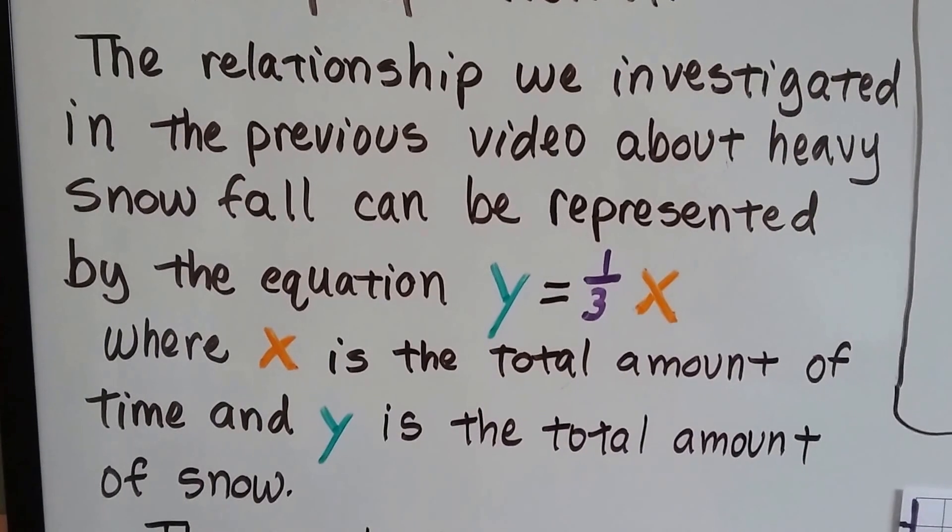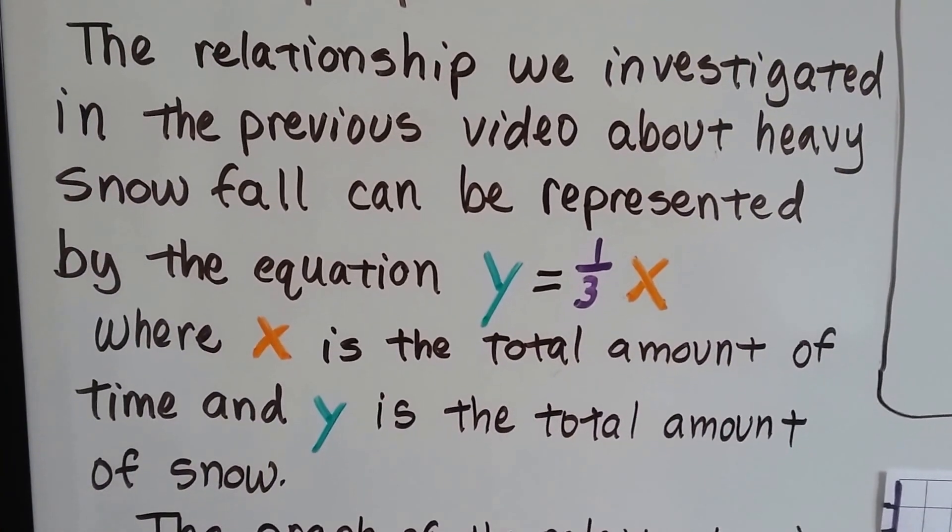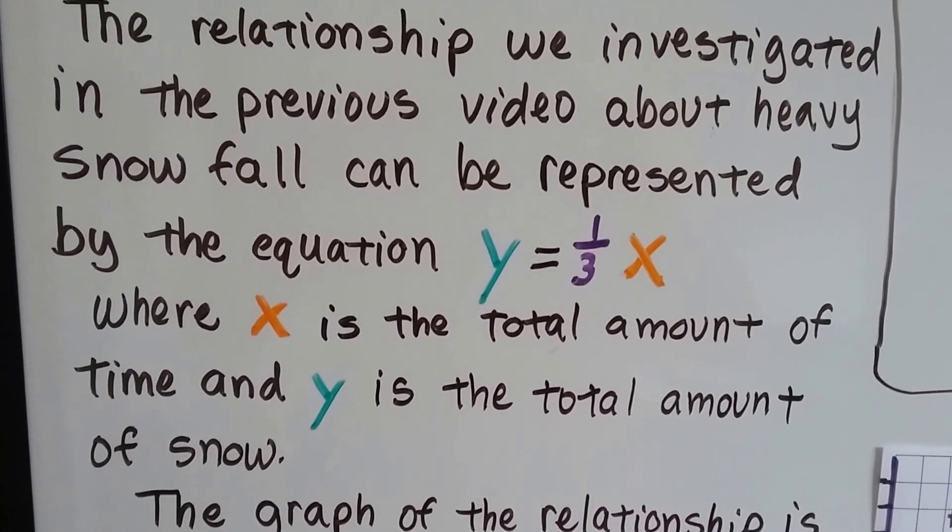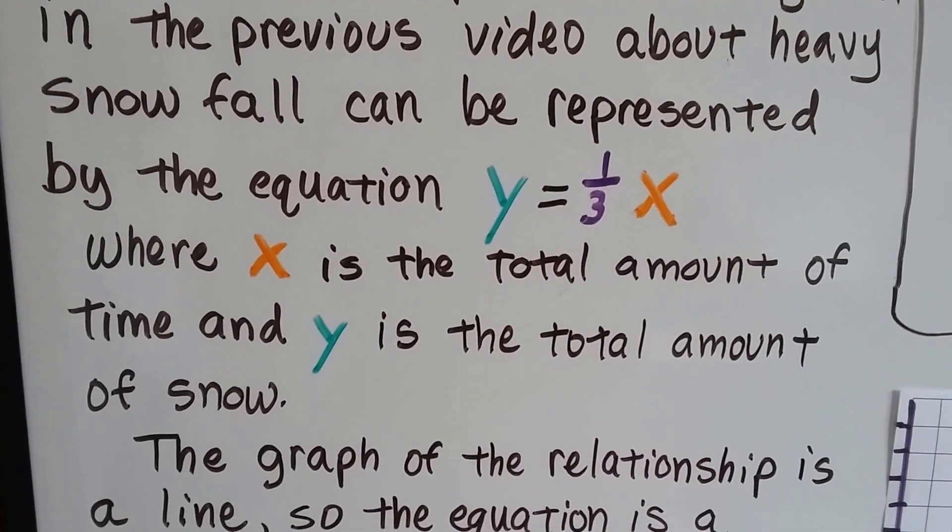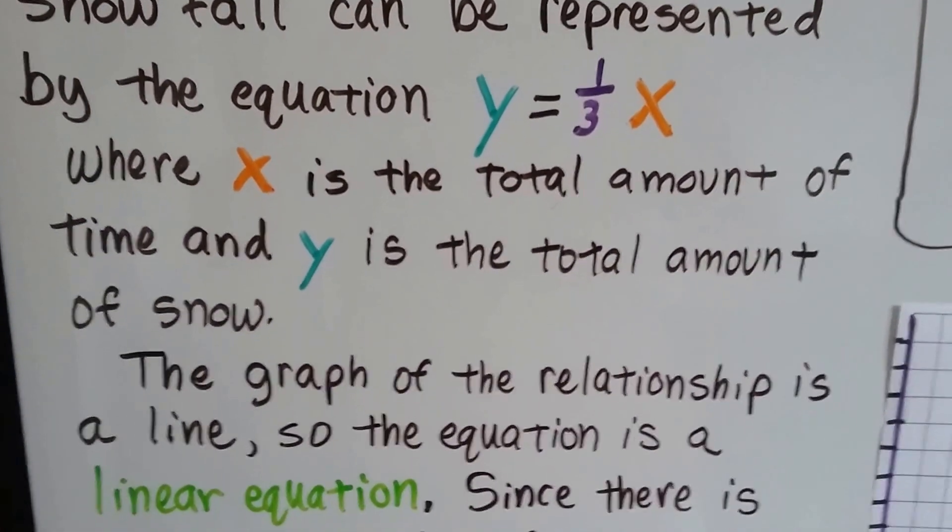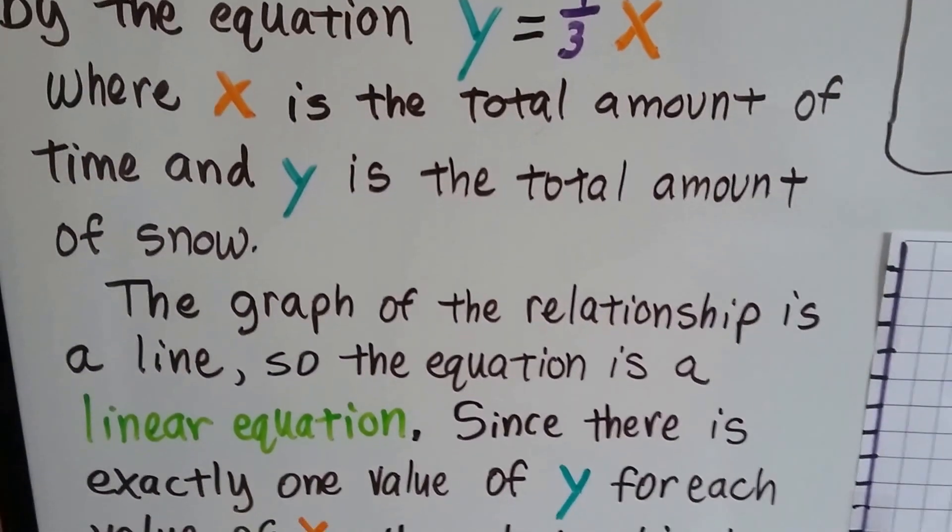The relationship we investigated in the previous video, number 6.2a, about heavy snowfall, can be represented by the equation y equals one-third x, where x is the total amount of time and y is the total amount of snow.